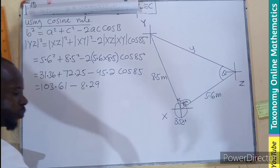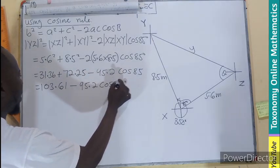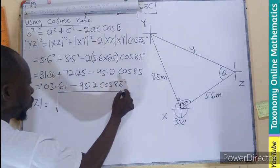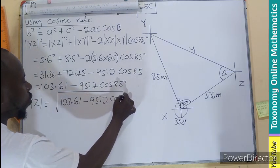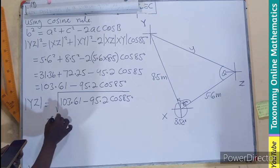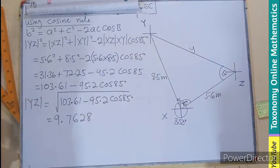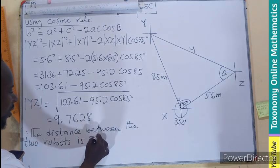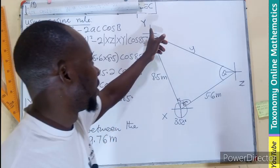There are a lot of decimal places. This is going to be the length of YZ equals to the square root of the value we are having here. 103.61 minus 95.2 times cosine 85 degrees. Let's put that all in our calculator. And this value will give you 9.67282. Let's make it four decimal places. But the question is asking for the distance. So we can see that, therefore, the distance between the two robots is going to be 9.76 meters. That is if I'm leaving it in two decimal places.